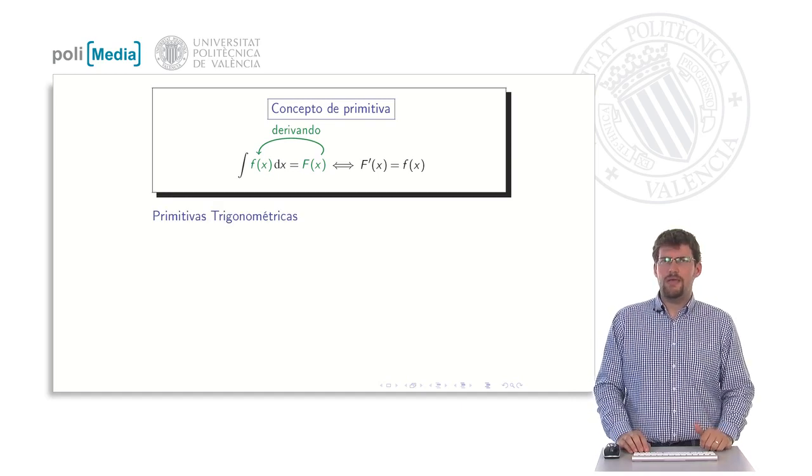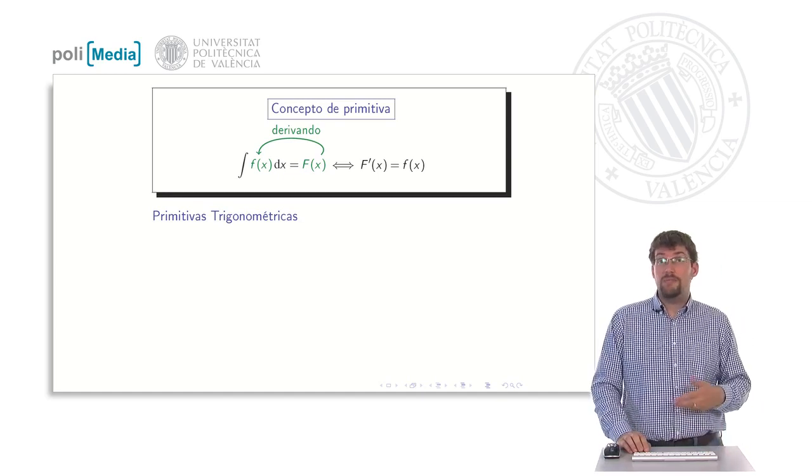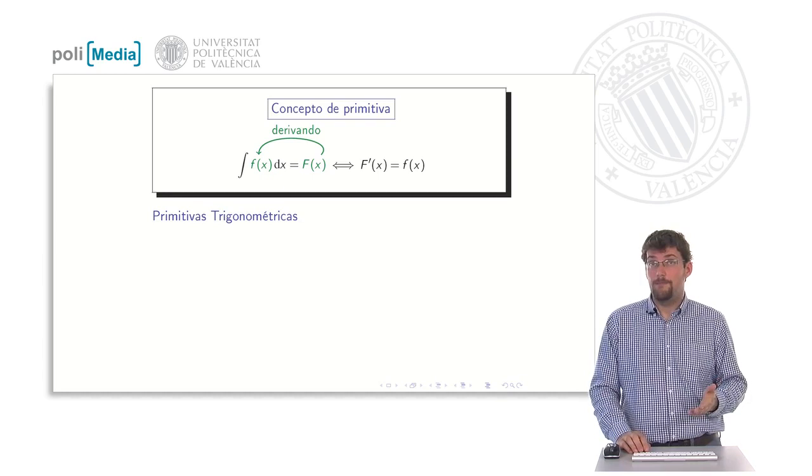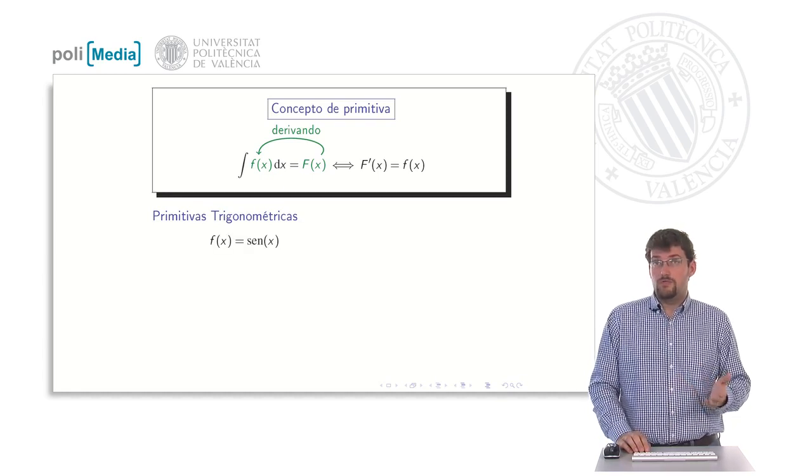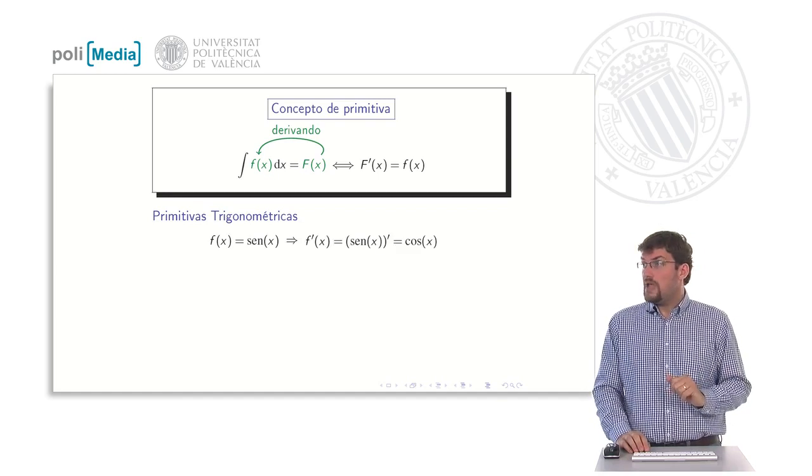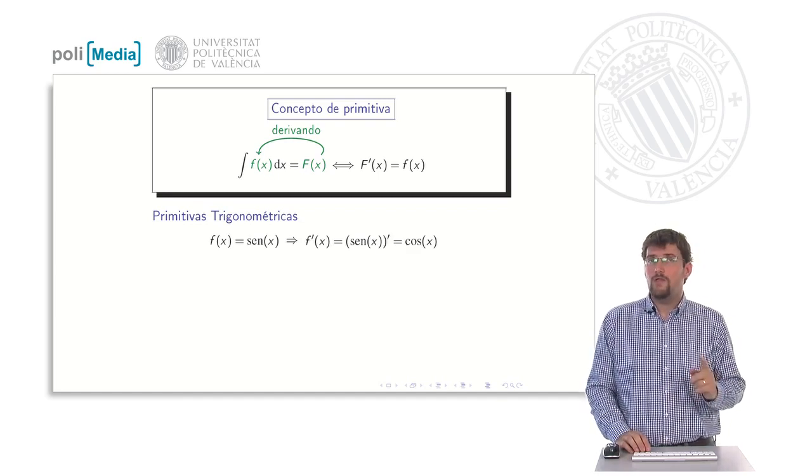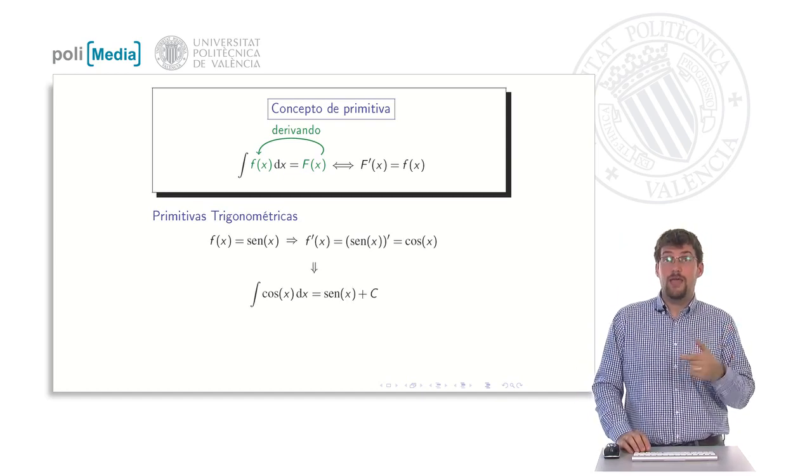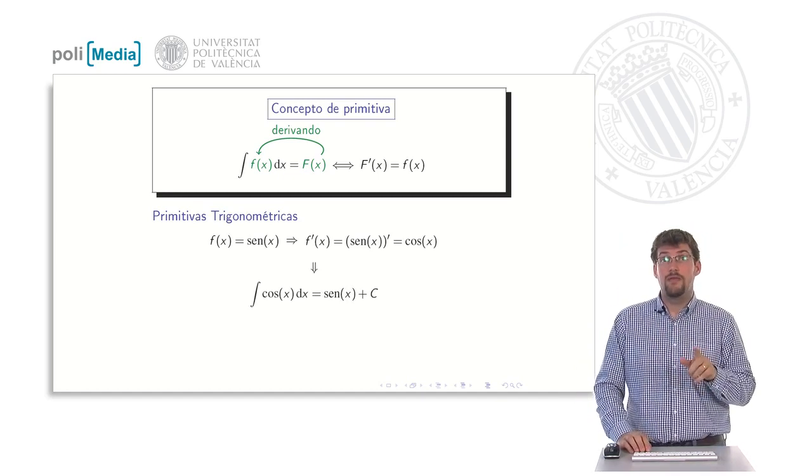Keeping this in mind, one can obtain the primitives of trigonometric functions only by knowing how they are derived. If we take the function of x as sin, we know that its derivative is cosine. So, if the derivative of sin is cosine, then the primitive or antiderivative of cosine is simply obtained by working backward.